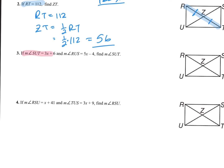Next, we have the measure of angle SUT — that angle measure right there is 3X plus 6. And then they're asking about angle RUS, which is 5X minus 4. They're asking us to find the measure of angle SUT.